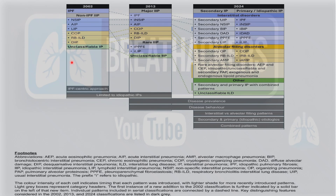If you have been following the older 2002 and 2013 classification, this update brings some exciting and important changes. The 2002 classification gave us the first structured approach, though it was an IPF-centric approach and mainly limited to idiopathic IPs. It classified ILDs as IPF, non-IPF, and unclassifiable IP.